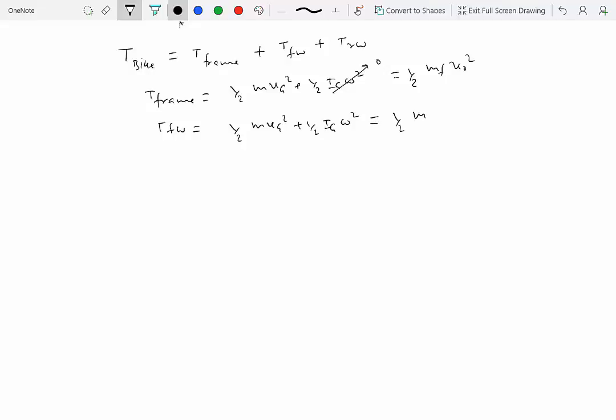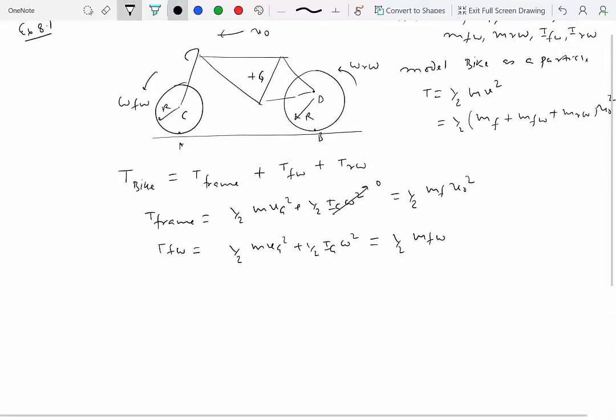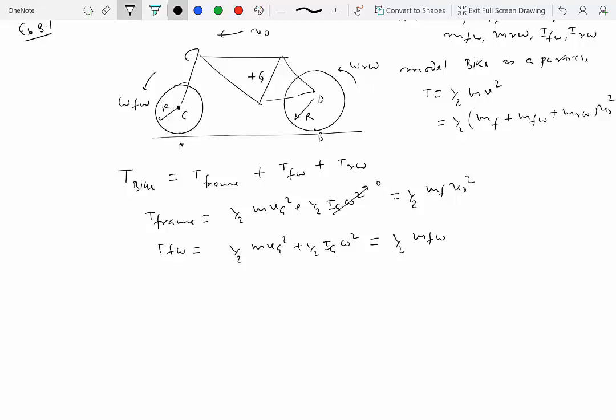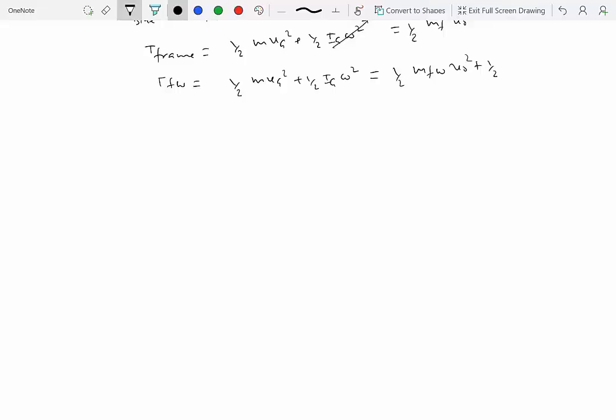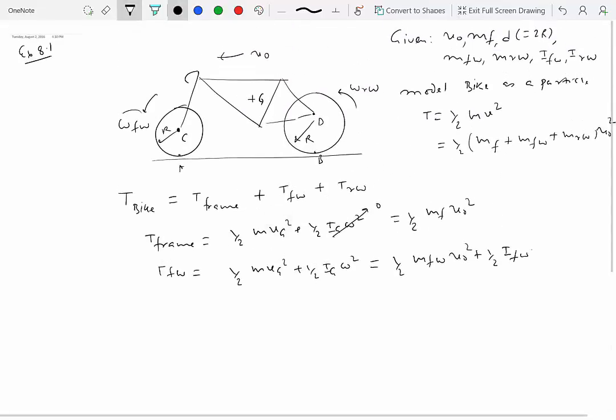So this would be ½ front wheel's mass, velocity of the center of mass of the front wheel is same as the velocity of the bike because this is rigidly connected to the frame itself. So that would be V₀ squared plus ½ the mass moment of inertia of the front wheel times its angular velocity. So the angular velocity is ω_FW.